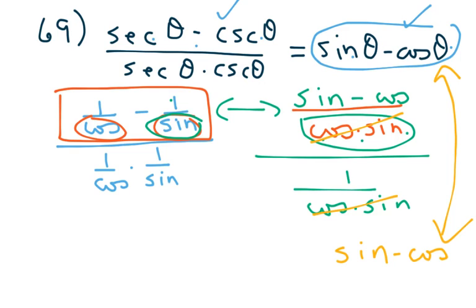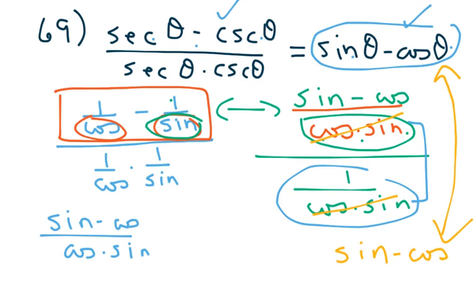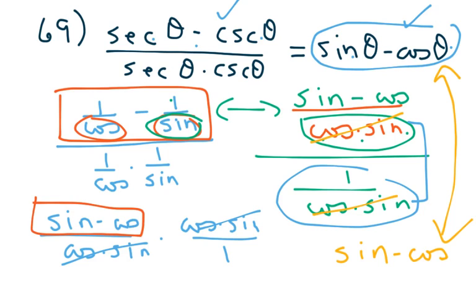Some of you might ask how I cancelled those terms — that's just fraction division: sine minus cosine over cosine sine, divided by one over cosine sine, is the same as multiplying by cosine sine over one, and those cancel. I'm going to make another video and do about five more odd-numbered identity problems. We'll spend one day on this, and the next day you'll use the ones from class to help with the even problems — two days total on section 6.3.